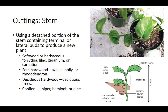Cuttings, the most common type of asexual propagation, refer to using a detached vegetative part to produce a new plant. The four types of cuttings are stem, leaf, leaf bud, and root cuttings. Stem cuttings use portions of the stem containing terminal or lateral buds. Stem cuttings can be made from herbaceous or softwood (tissues that are not lignified), semi-hardwood (tissues that contain lignified tissue), deciduous hardwood (mature woody stems), and conifer cuttings (hardwood obtained from conifer plants in early winter).